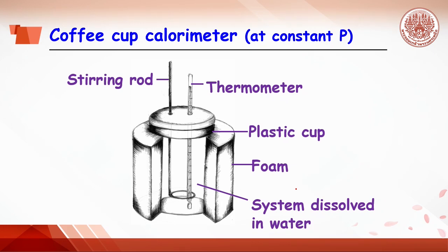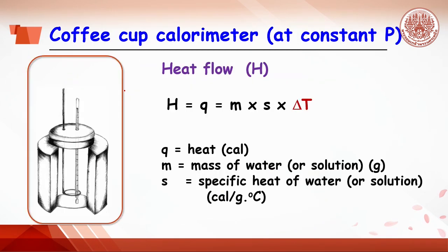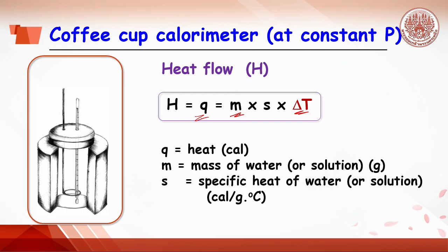The coffee cup calorimeter basically consists of styrofoam to insulate the heat, and a plastic cap with holes to insert a thermometer and stirring rod. When a chemical reaction occurs in the calorimeter, the heat of the reaction can be detected by the change of temperature. The enthalpy or heat flow can be calculated with the equation Q = msΔT, where Q is heat flow, m is mass of water or solution in grams, delta T is the change in temperature (final temperature minus initial temperature), and specific heat is the amount of heat required to raise the temperature of 1 gram of substance by 1 degree Celsius.